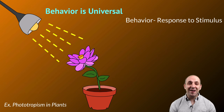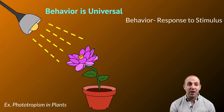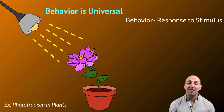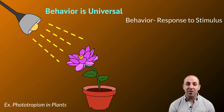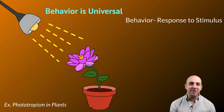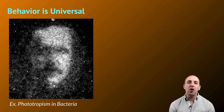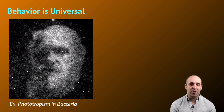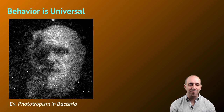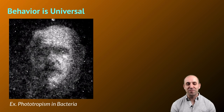It's important to understand that just as communication is universal, behavior is universal. This plant is demonstrating a phototropic response — it's growing towards a light source. That is a behavior. A behavior is a response to a stimulus; in this case, it's the direction of the light source that's driving the response and the growth pattern of the plant. This is a relatively simple behavior, but behavior does not even have to be this complex. These bacteria are growing in response to different light patterns, and you can see the images that they're making as a result of this phototropic behavior.